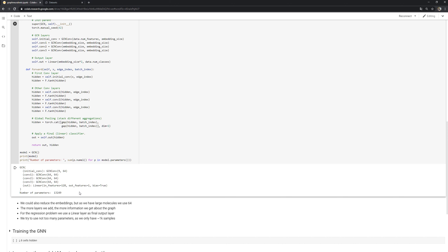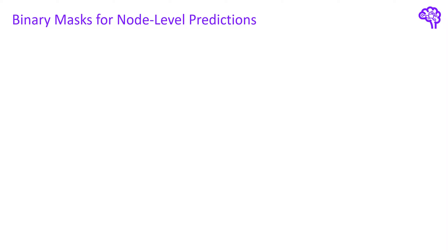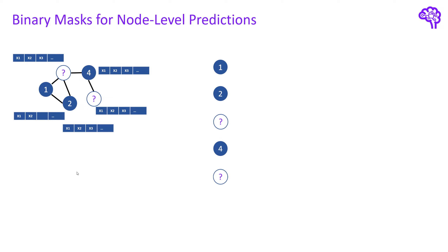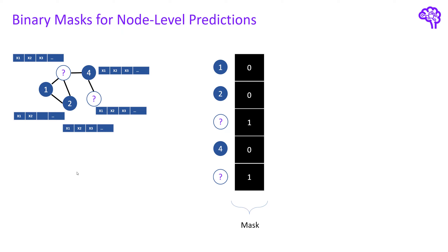The number of parameters is not too high, which is good because we only have about 1,000 data points. A quick remark on node-level prediction problems: in those cases, you often encounter binary masks. This means not all nodes are available for training or prediction — for example, you might train on nodes 1, 2, and 4 but predict only on nodes 3 and 5. These binary masks tell you which nodes to use for each task, allowing you to mask out nodes you're not interested in.